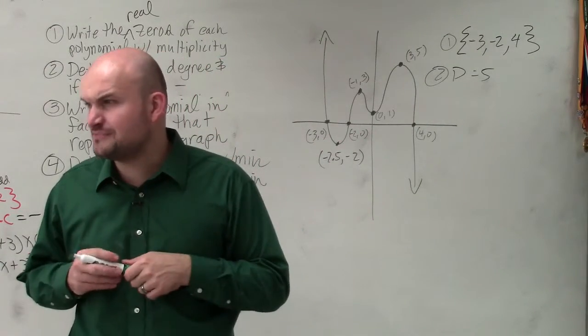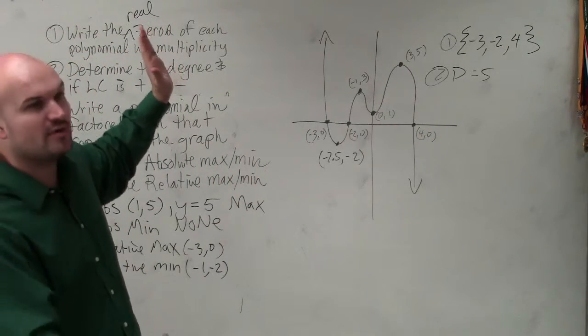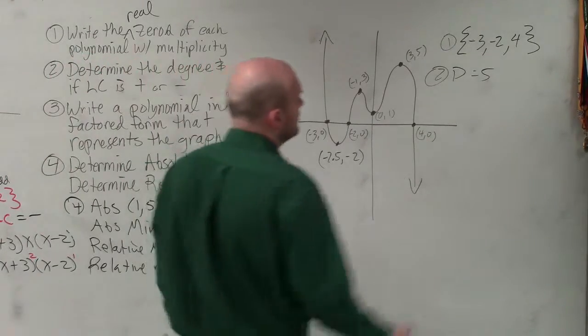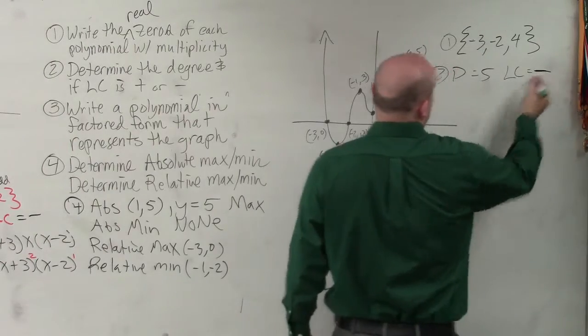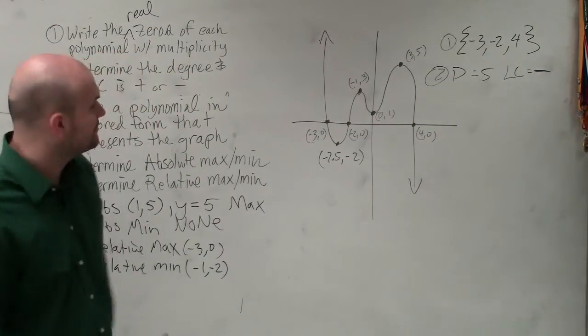Then we need to determine if our leading coefficient is positive or negative. So we look at the behavior of the graph. It's rising left, falling right. If you guys go back to your end behavior chart, you would know that has a negative leading coefficient. And we know that the degree would have to be 5 as well, or odd.